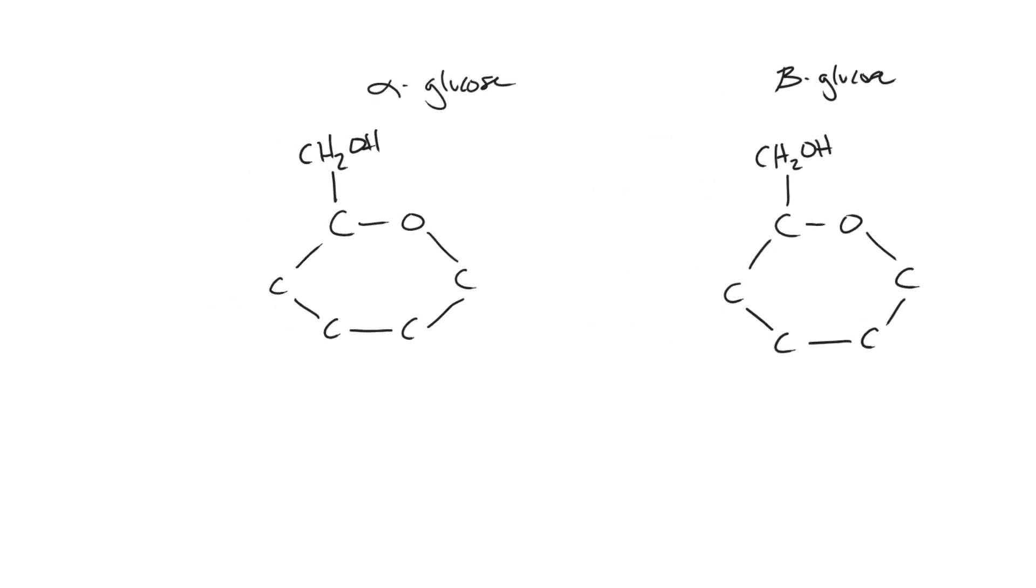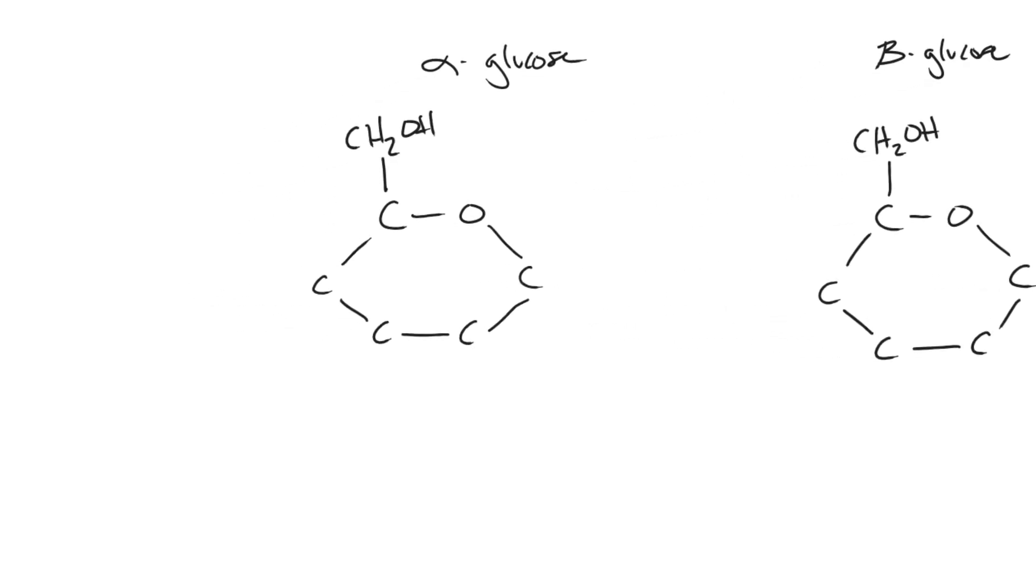So we're going to go off of the first carbon. Now if we go clockwise from our oxygen, this becomes our first, second, third, fourth, fifth, and sixth carbon, which gives us the chemical composition C6 H12 O6. In alpha glucose, this first carbon is going to have the hydrogen on top and